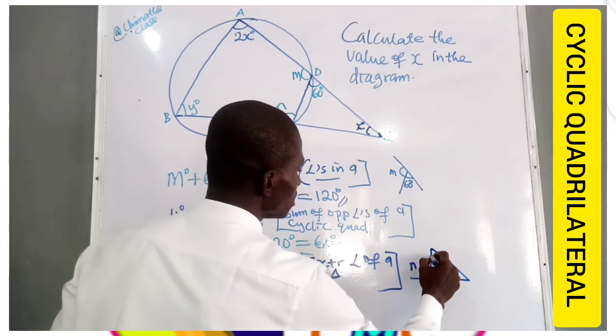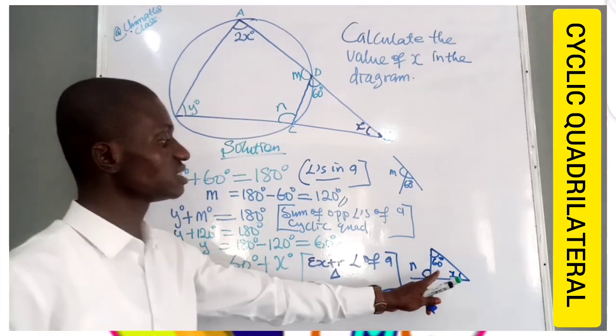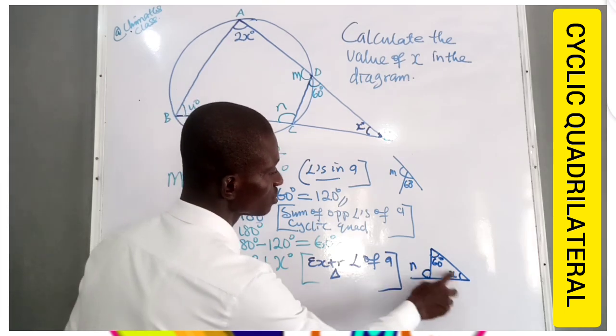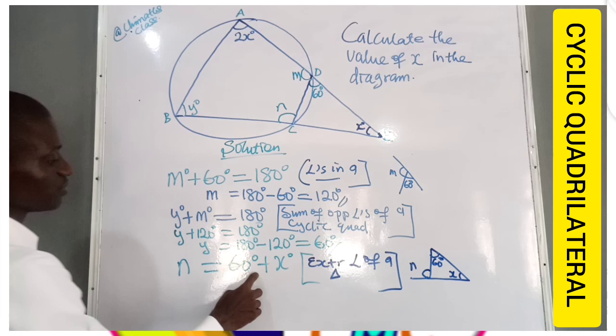If you look closely, we observe that we have a triangle like this. So this is our N, this is 60 degrees and this is X. For more on exterior angles of a triangle, please check my previous lessons. So this is an exterior angle, so it's sum of the opposite interior angles. That's why we have 60 plus X.